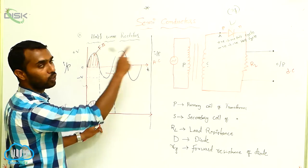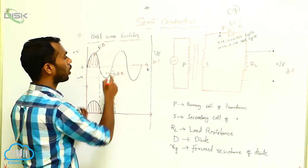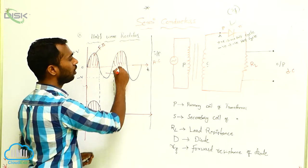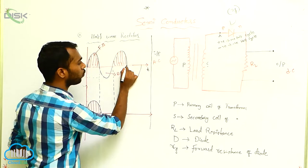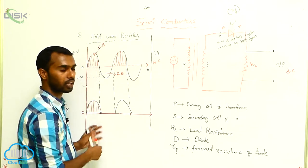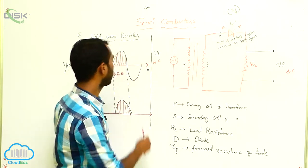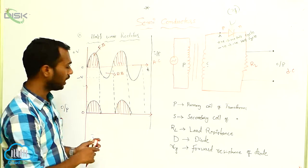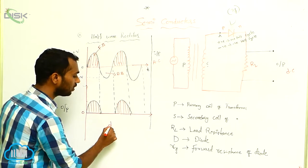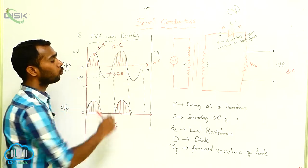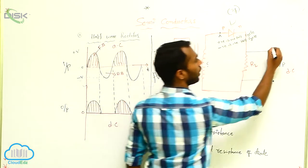For positive half cycle, the diode is in forward bias — that passes through the diode. For negative half cycle, the diode is in reverse bias — current does not pass. Then again for positive half cycle, current passes; for negative half cycle, current does not pass. We are getting only one direction. This output is DC, this input is AC. This entire device is converting AC current into DC current.